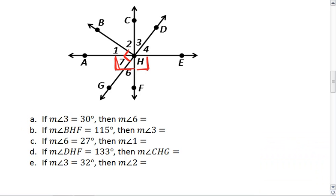Problem A. If measure of angle 3 is 30 degrees, then the measure of angle 6. Let's see. 3 and 6 are vertical angles. They have the same measure, so the measure of angle 6 is 30 degrees.